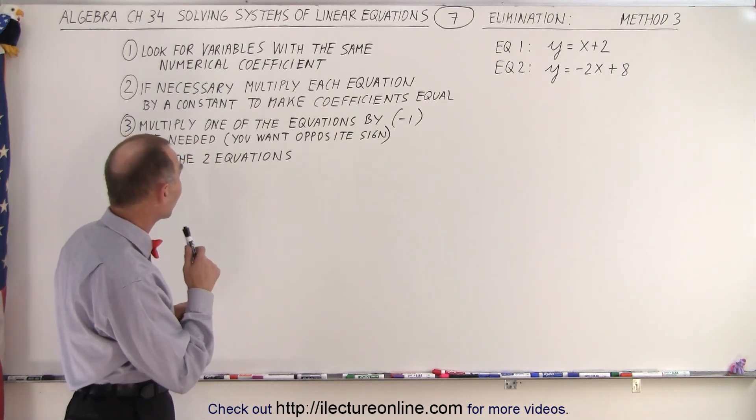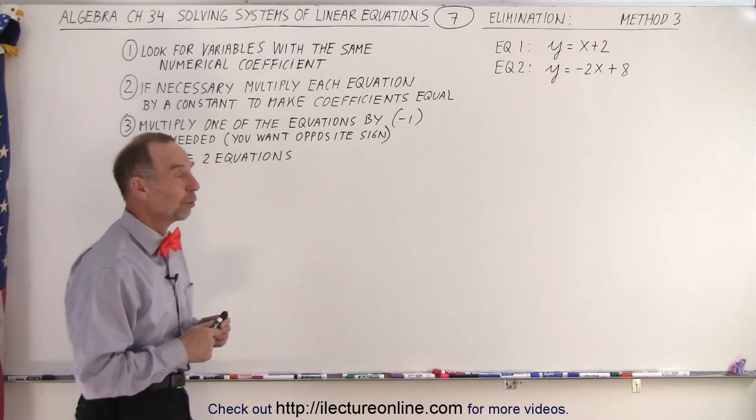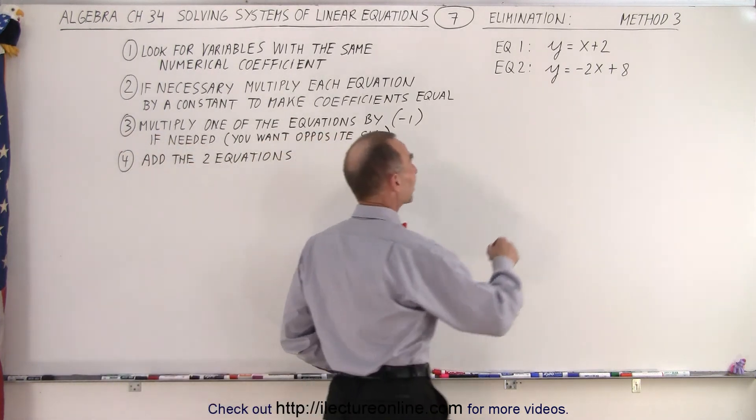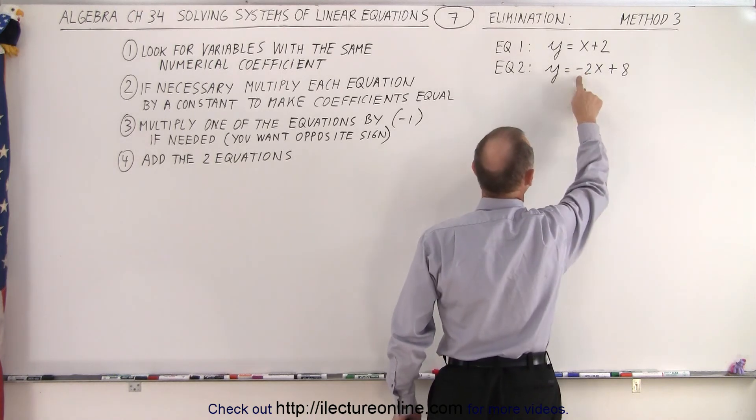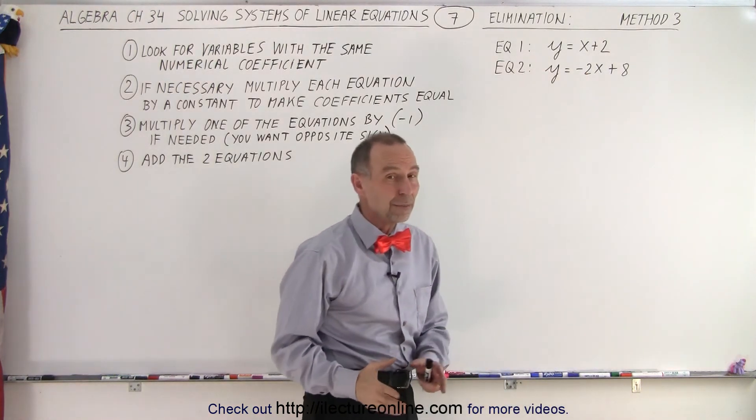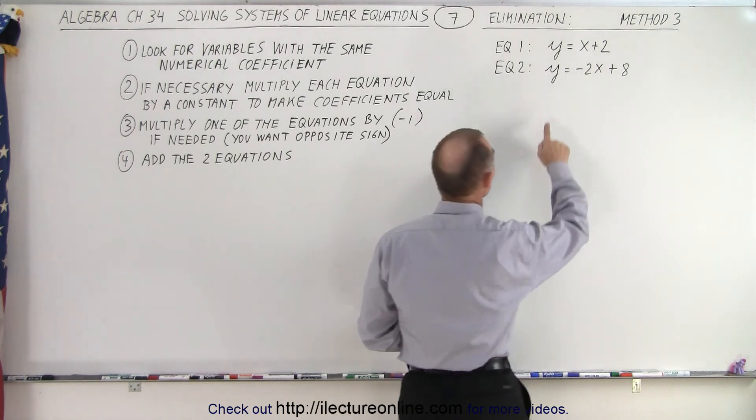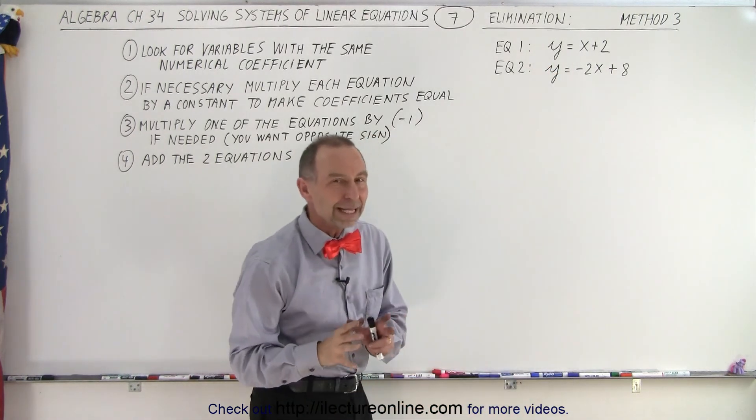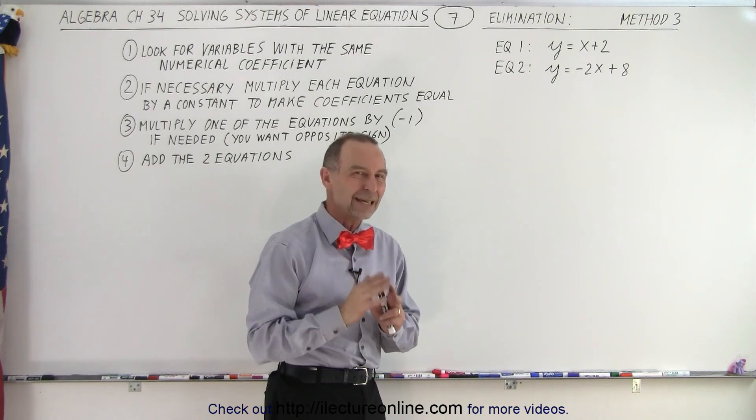So the first step says look for variables with the same numerical coefficient. So we only have two variables, x and y. Notice that for x we have a coefficient of 1 there and negative 2 there, so they're not the same. But for our y's, notice the coefficient is 1 and 1, so we'll use y. We'll eliminate the variable with the same coefficient.